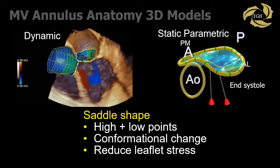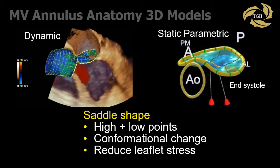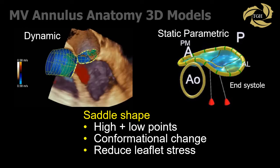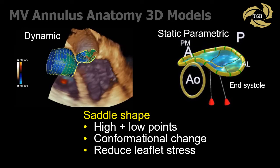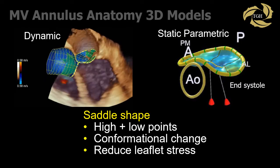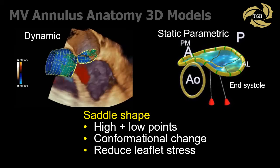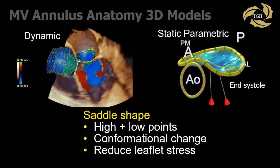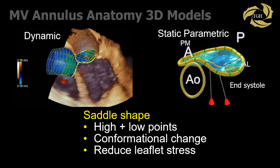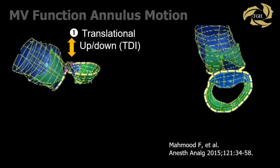The highest points are in the mid portion of the anterior-posterior annulus; the nadirs are the commissures. The posterior annulus is flatter than the anterior annulus, which is elevated as it attaches to the aortic root at the aortic-mitral curtain. The saddle-shaped annulus undergoes conformational change, which is crucial for normal function. Annular height and motion play an important role in reducing leaflet stress.